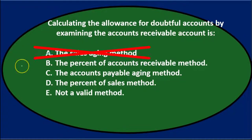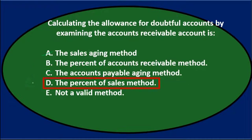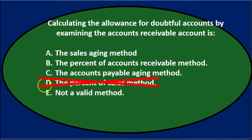B says the percentage of accounts receivable method — that sounds reasonable since we're dealing with the accounts receivable side to determine how much is uncollectible. C says the accounts payable aging method — we're not using payables, so it's not C. D says the percentage of sales method — that concentrates on the sales side, but here we're concentrating on the receivable side, so that's not it. E says not a valid method — it is valid, we can concentrate on either receivables or sales.